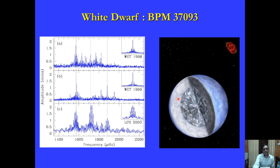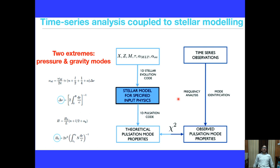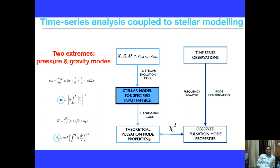The basic methodology of astro-seismology is: take time-series observations of pulsating stars, perform frequency analysis, identify the modes (determining n, l, m), compare the observed pulsation mode properties with theoretical models, minimize the deviation between observed and theoretical predictions, and confirm the model is correct. Both observation and theory are equally important, requiring a one-to-one consistency between them.